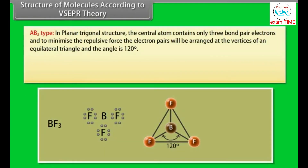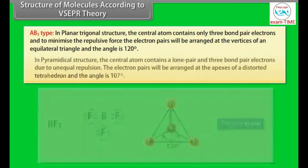In an AB3-type planar trigonal structure, the central atom contains only three bond pair electrons, and to minimize the repulsive force, the electron pairs are arranged at the vertices of an equilateral triangle. The bond angle is 120 degrees.